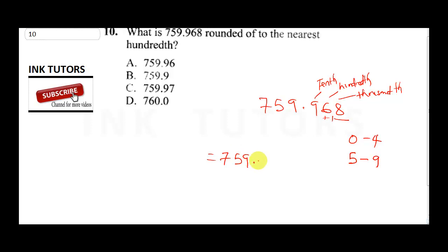So instead of having 7 in the hundreds place, we now have 8, giving us 800. Rounded to the nearest 100, the final answer is 800, which is option C.